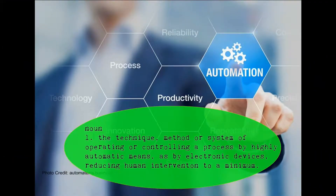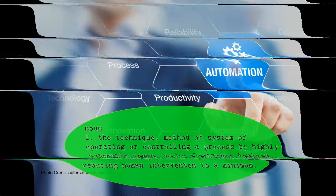The automation definition doesn't say we eliminate human input — it talks about reducing it. And automation is a process, it's not an endpoint. There's a lot of things you can do today, and going forward there's going to be even more. Automation is a process, not an event.